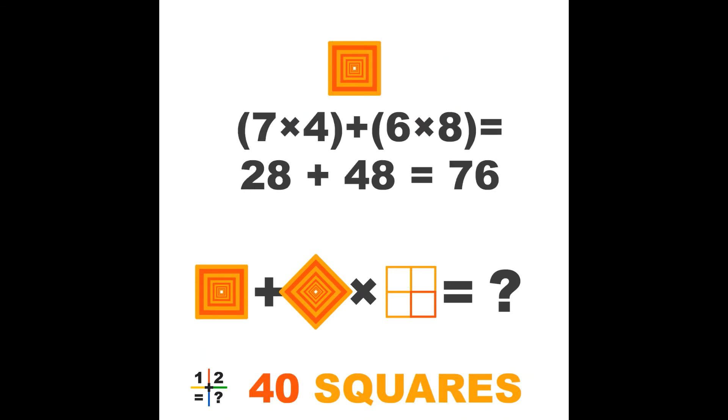Time to do the math for the first object. 7 times 4 plus 6 times 8 equals 28 plus 48 equals 76. Yes, even though we can't count all the squares without a Hubble telescope, we can solve it with the hint and the logic.